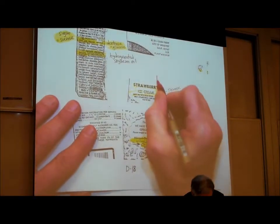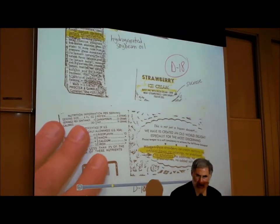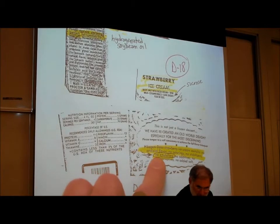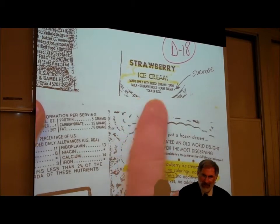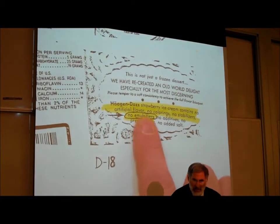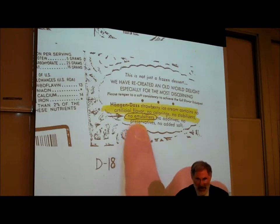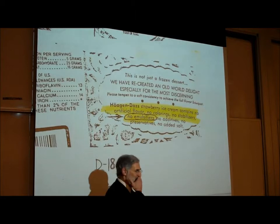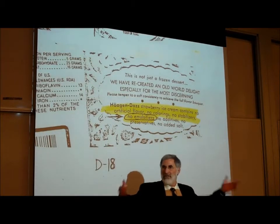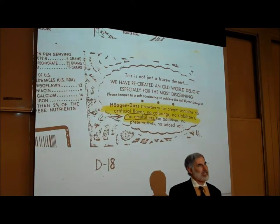On D18, the Haagen-Dazs label at the bottom says Haagen-Dazs strawberry ice cream contains no artificial flavor, no colorings, no stabilizers, and no emulsifiers. Not every food has emulsifiers, but you have to notice what's on the label. My point is that if you didn't know what an emulsifier was, you wouldn't care whether there was or wasn't one in your food. I'm not saying emulsifiers are bad — I'm just explaining what they're there for.